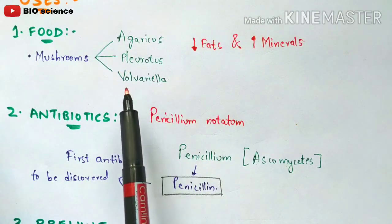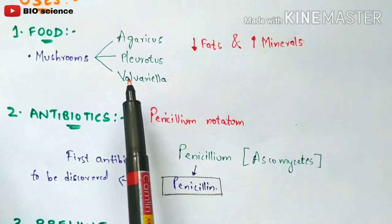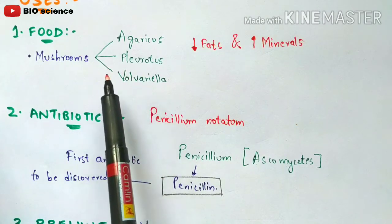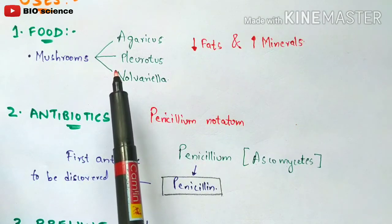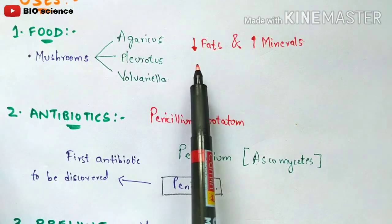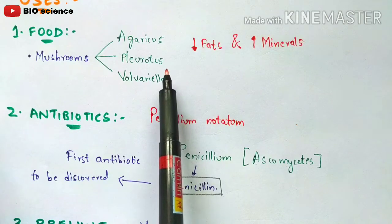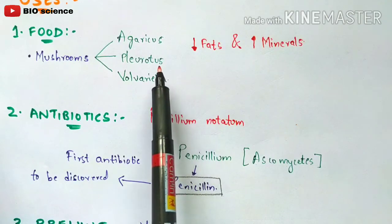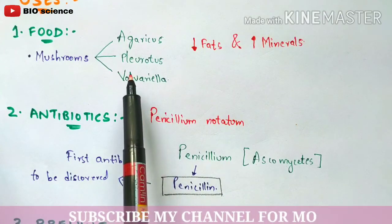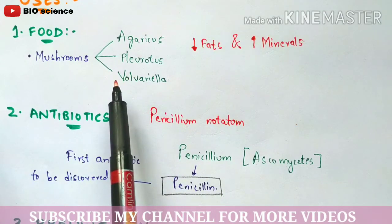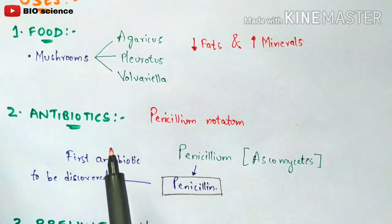The three types of mushrooms available in the market are Agaricus, Pleurotus, and Volvariella. These mushrooms are consumed by human beings. All of these mushrooms consist of a low amount of fat and a high amount of minerals, which helps in balancing cholesterol levels. They are beneficial for patients suffering from bad cholesterol, and doctors also recommend consuming mushrooms.